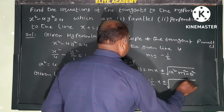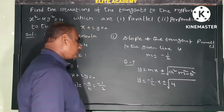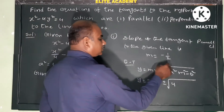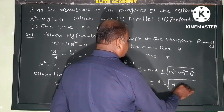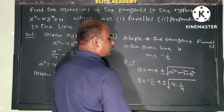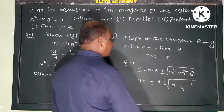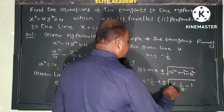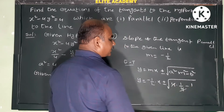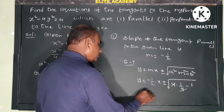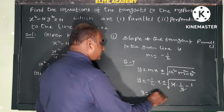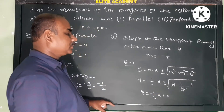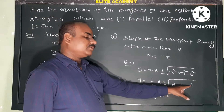So y equals minus 1 by 2 into x, plus or minus square root of a squared which is 4, times m squared which is minus 1 by 2 whole squared equals 1 by 4, minus b squared which is 1. So inside the root: 4 times 1 by 4 minus 1 equals 1 minus 1 equals 0.